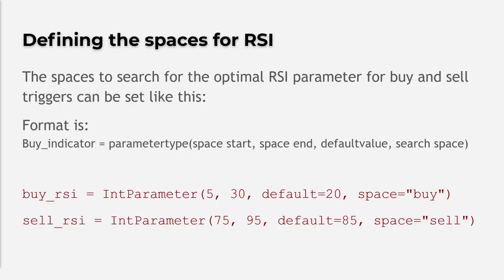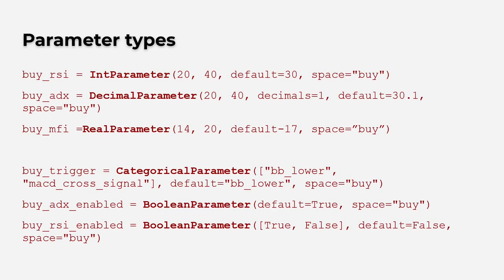To translate this into a hyperopt file, I first have to define the search space for the indicator parameters using these lines in my hyperopt file. Each search space begins with a start value, an end value, and also a default value. You can also define to which space a parameter belongs. There is one other thing to mention before I continue, and that's the parameter type to use.